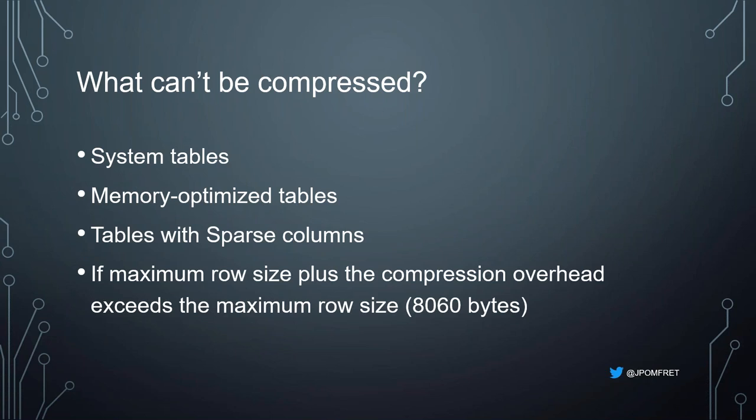What can't be compressed? System tables, memory-optimized tables, or tables with sparse columns cannot be compressed. Also, if your row plus the compression overhead exceeds the maximum row size of 8,060 bytes, it cannot be compressed. SQL Server does this row size check when you first compress your object and again whenever rows are inserted or updated. Any update to fixed-length columns must always succeed, and you must also be able to disable data compression successfully.